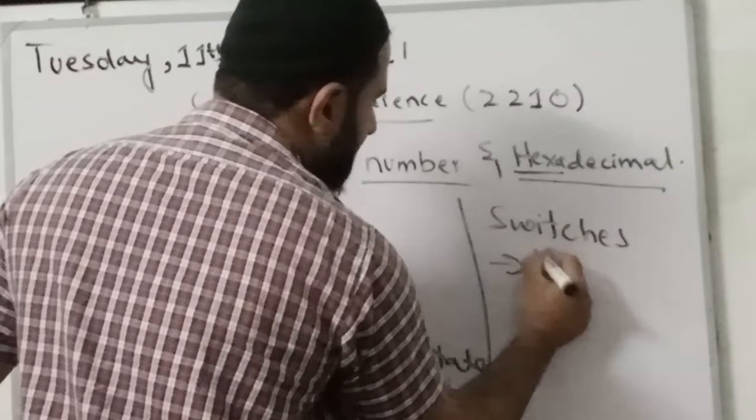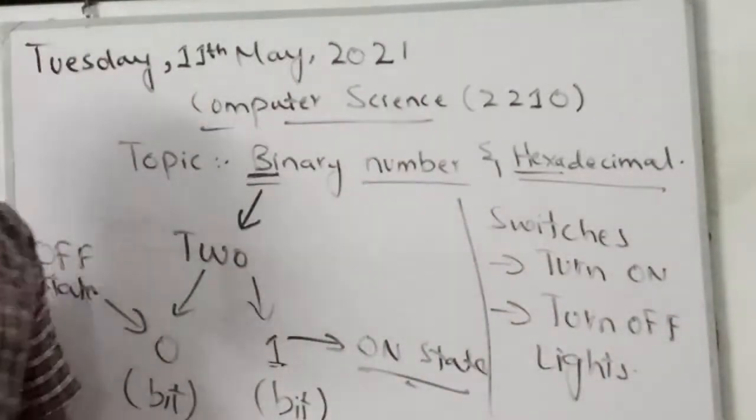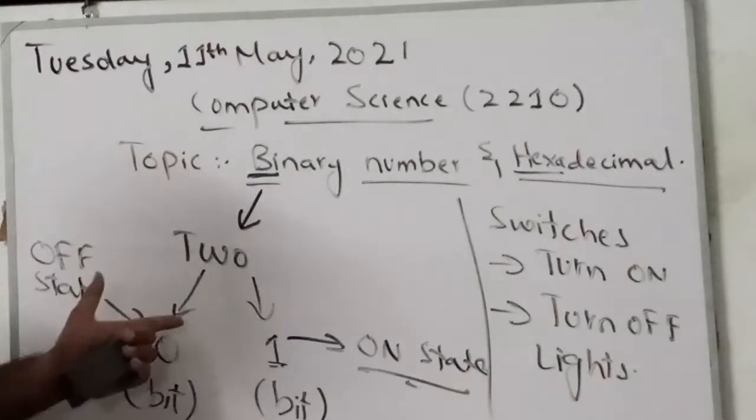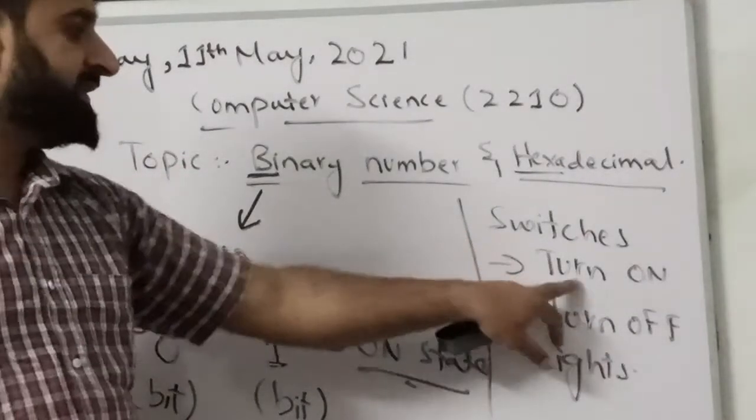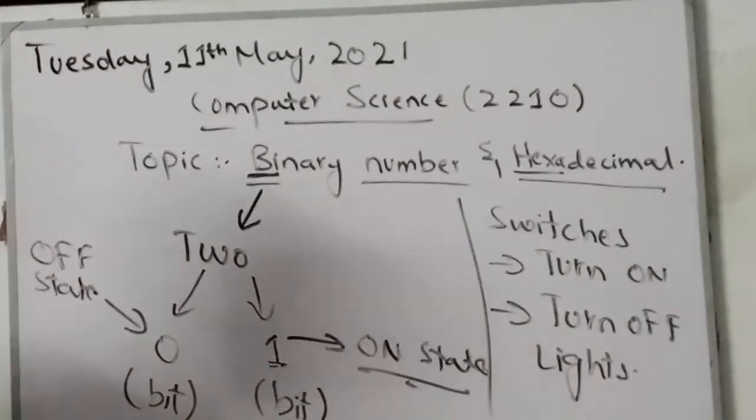In switches to turn on and turn off lights. This is a basic example where do we use these binary numbers.